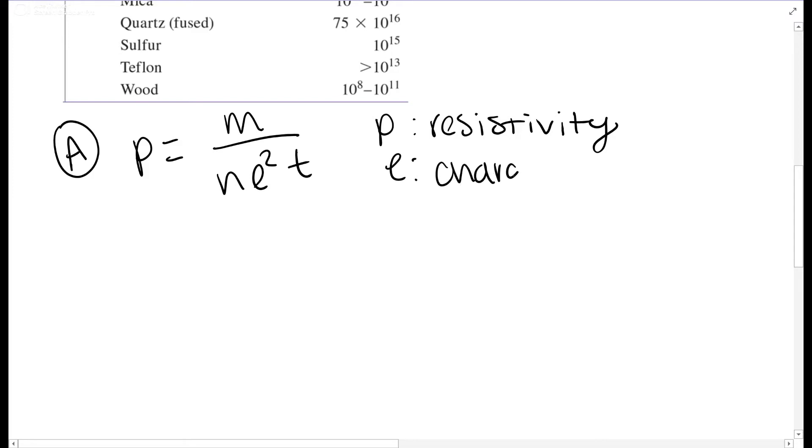This e is the charge of an electron. m is the mass of an electron. t is time. And n is the concentration value they gave us, which is the only number they gave you in the intro.